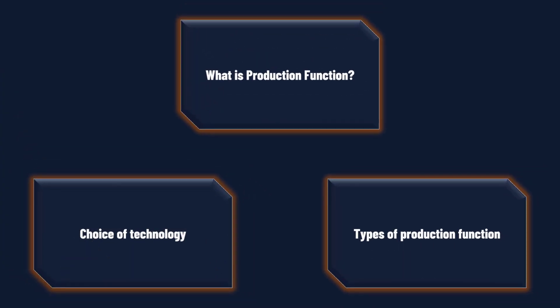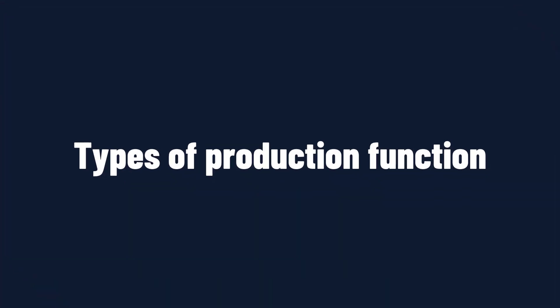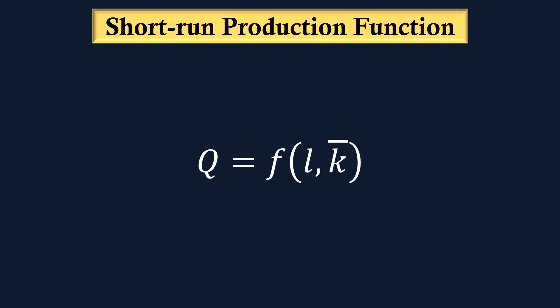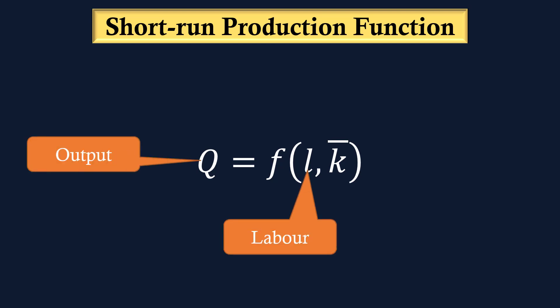It is time to know about two types of production function. First, short-run production function. Second, long-run production function. Short-run production function is algebraically represented as Q is a function of L and K-bar, where Q represents output, L represents labour, K represents capital, and the overbar indicates that capital is constant in the short-run.